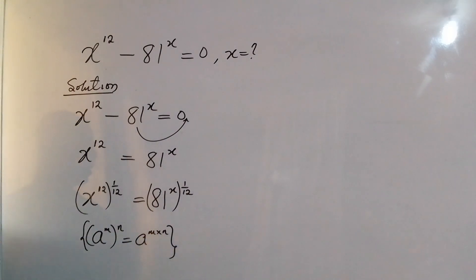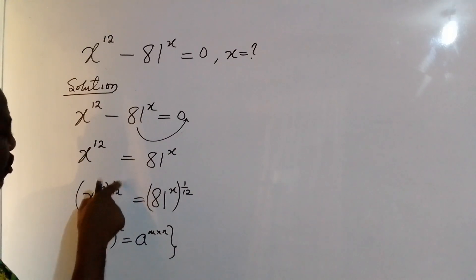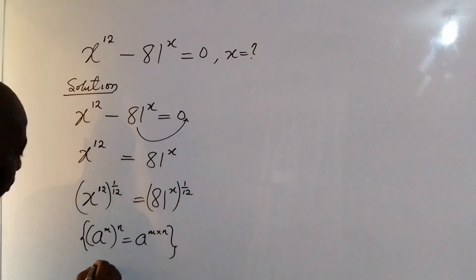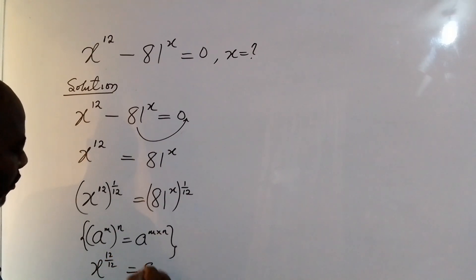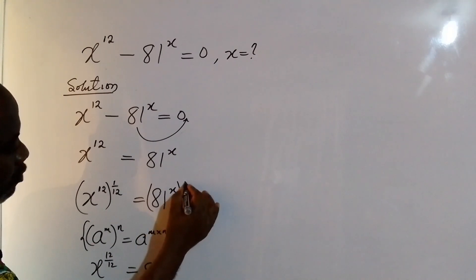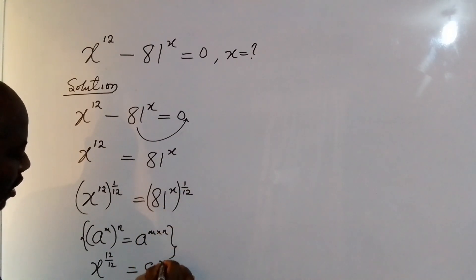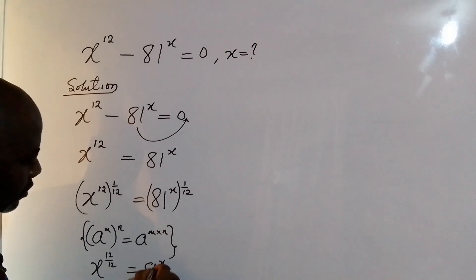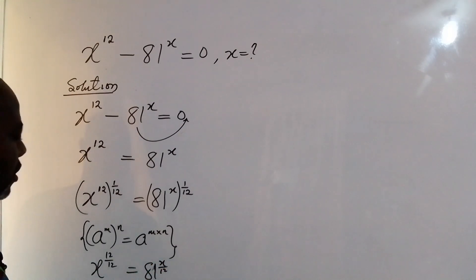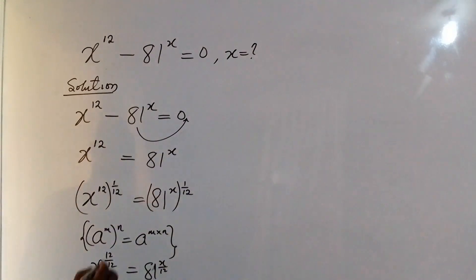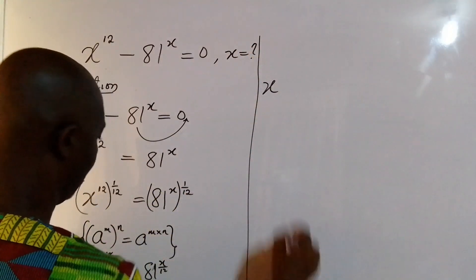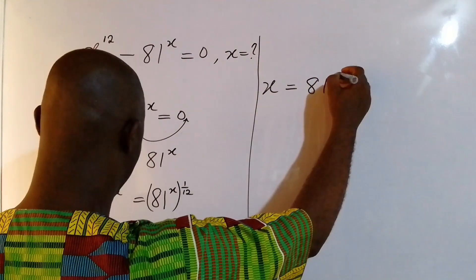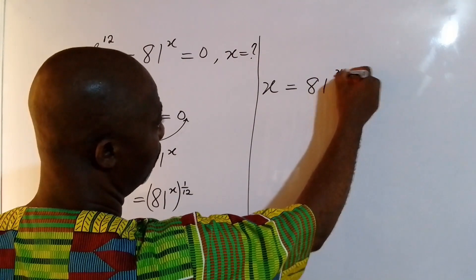So I simply multiply out the powers. 12 multiplied by 1 over 12 gives x raised to the power of 12 over 12, equal to 81 to the power of x multiplied by 1 over 12. Once that is done, I have x equal to 81 to the power of x over 12.